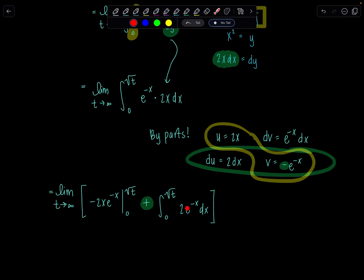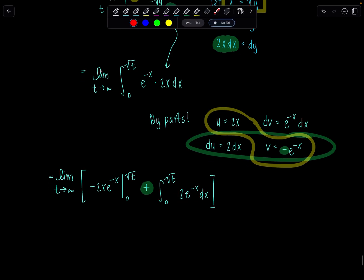Now hopefully this anti-derivative is no big deal. Just because there's a negative, I'm going to add a minus sign when I find the anti-derivative. We've got limit t goes to infinity. Let me write this as negative 2xe to the negative x. And then the anti-derivative here is going to be negative 2e to the negative x. And all of this will evaluate from 0 to the square root of t now.